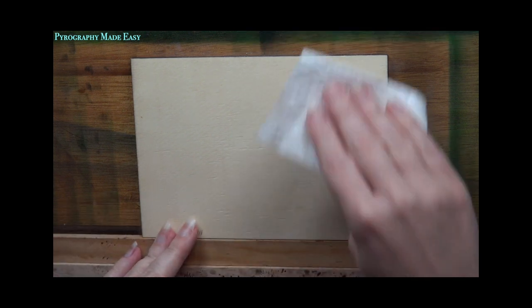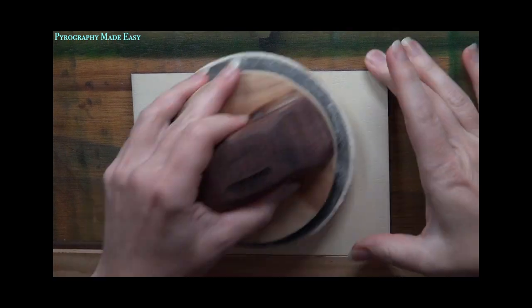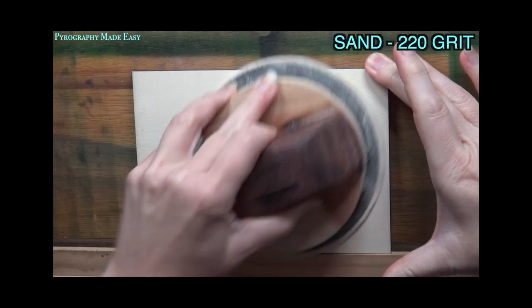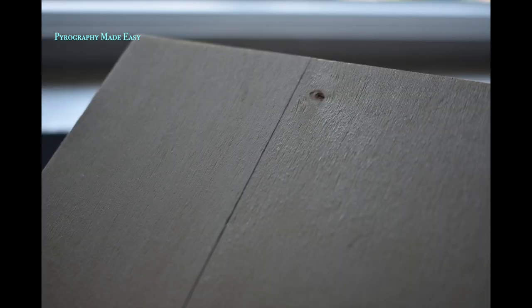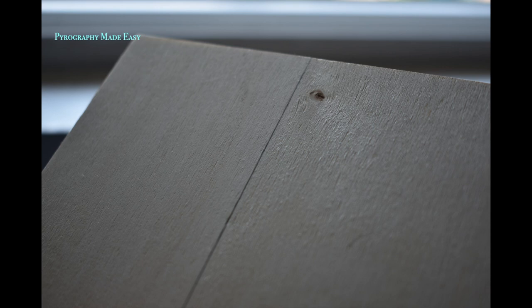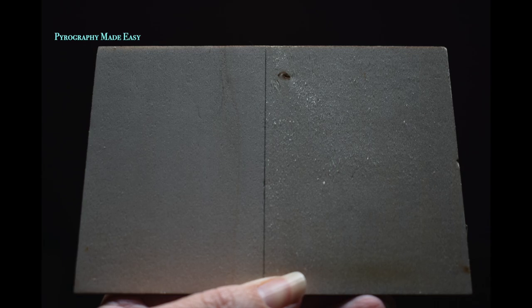This will allow the grains to raise up on the board. After the board is dried then sand again to get a super smooth board. The left side of this board has been prepared using the method I just outlined. The right side was left alone. Here is another view of that same board.